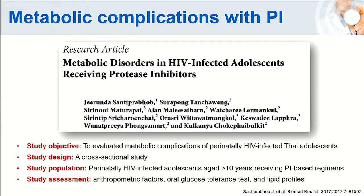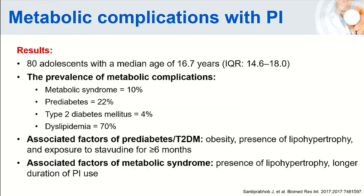This study conducted by the SIRILA team, led by Dr. Kanyarat, evaluated metabolic complications among perinatally HIV-infected Thai adolescents. The prevalence of metabolic syndrome was about 10%, prediabetes 22%, type 2 DM 4%, and dyslipidemia a very high 70%. Associated factors for prediabetes or type 2 DM included obesity, presence of lipohypertrophy, and exposure to D4T for at least six months. Associated factors for metabolic syndrome included the presence of lipohypertrophy and long-duration use of PI.